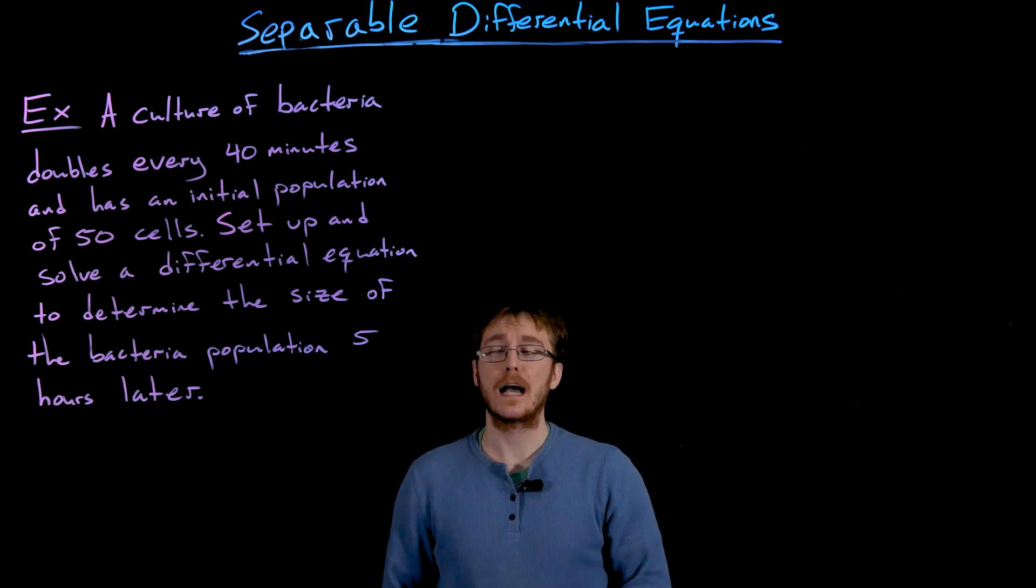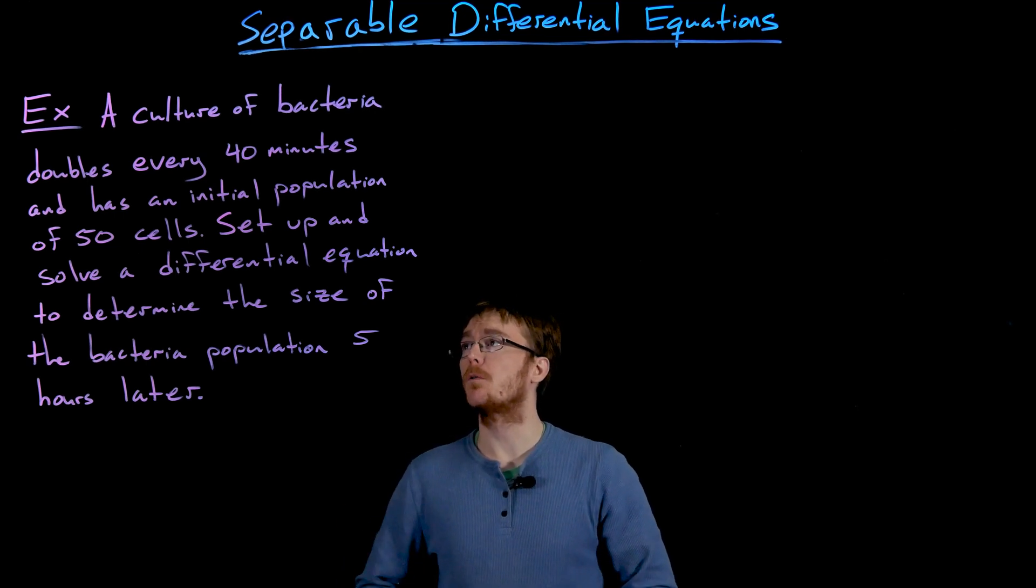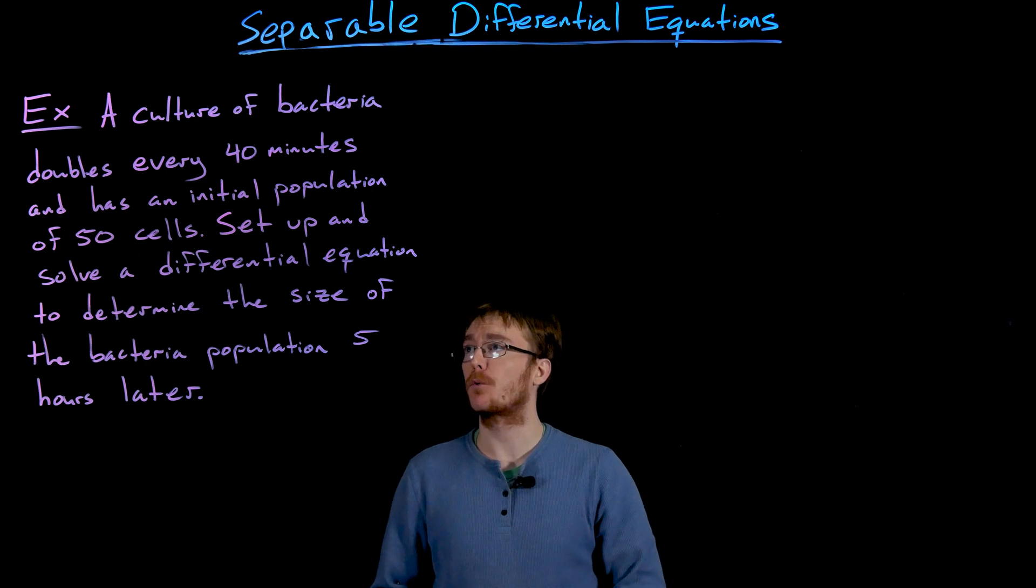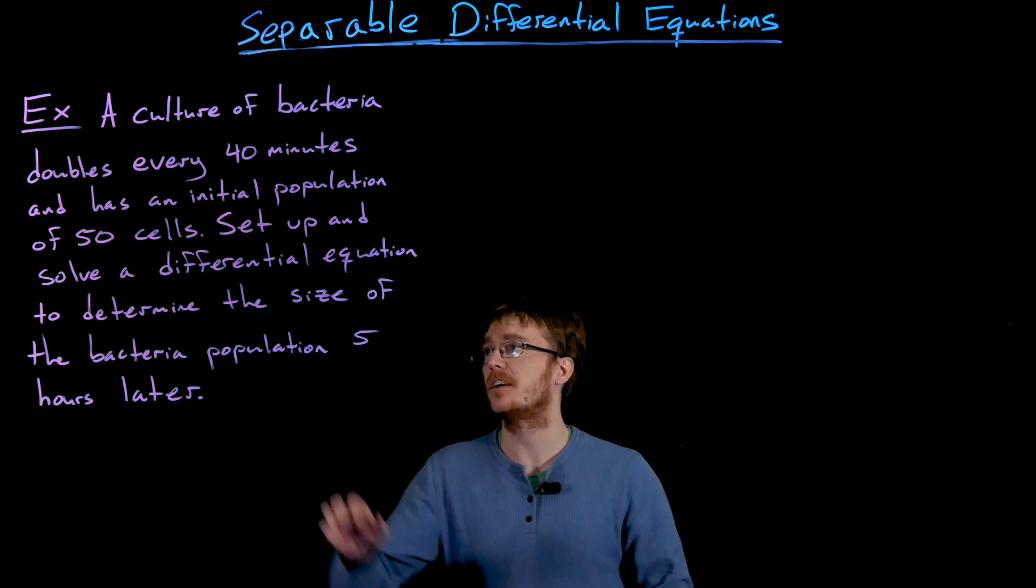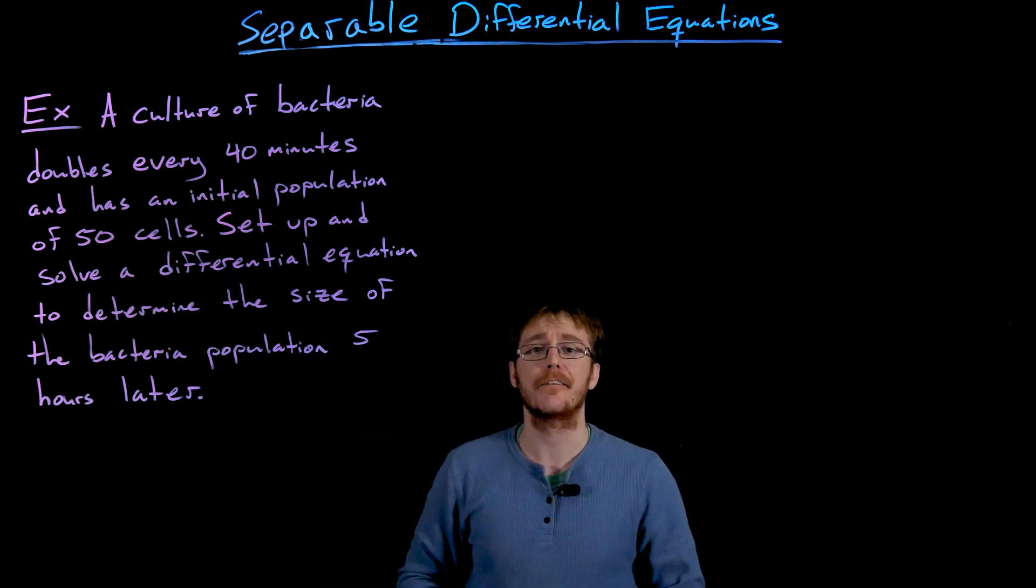In this example, we're going to try to solve an application problem. We are told a culture of bacteria doubles every 40 minutes and has an initial population of 50 bacteria cells. We want to set up and solve a differential equation to determine the size of the bacteria population five hours after this initial time when we had 50 cells.